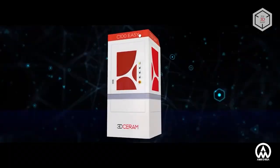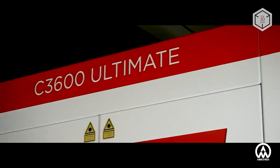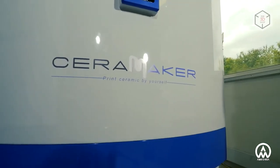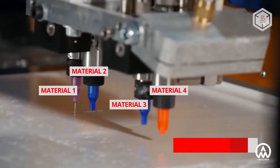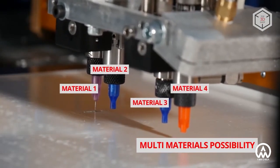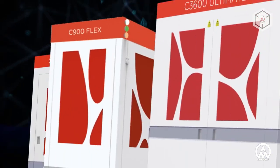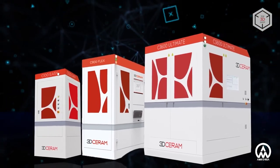The basic line of 3D Ceram Sinto SLA printers includes three key models: C100, C1000, and C3600, as well as their modifications. In addition, the company produces customized hybrid versions of its units that print with basic ceramics and additional materials simultaneously. The main difference between the models is the build volume and productivity.